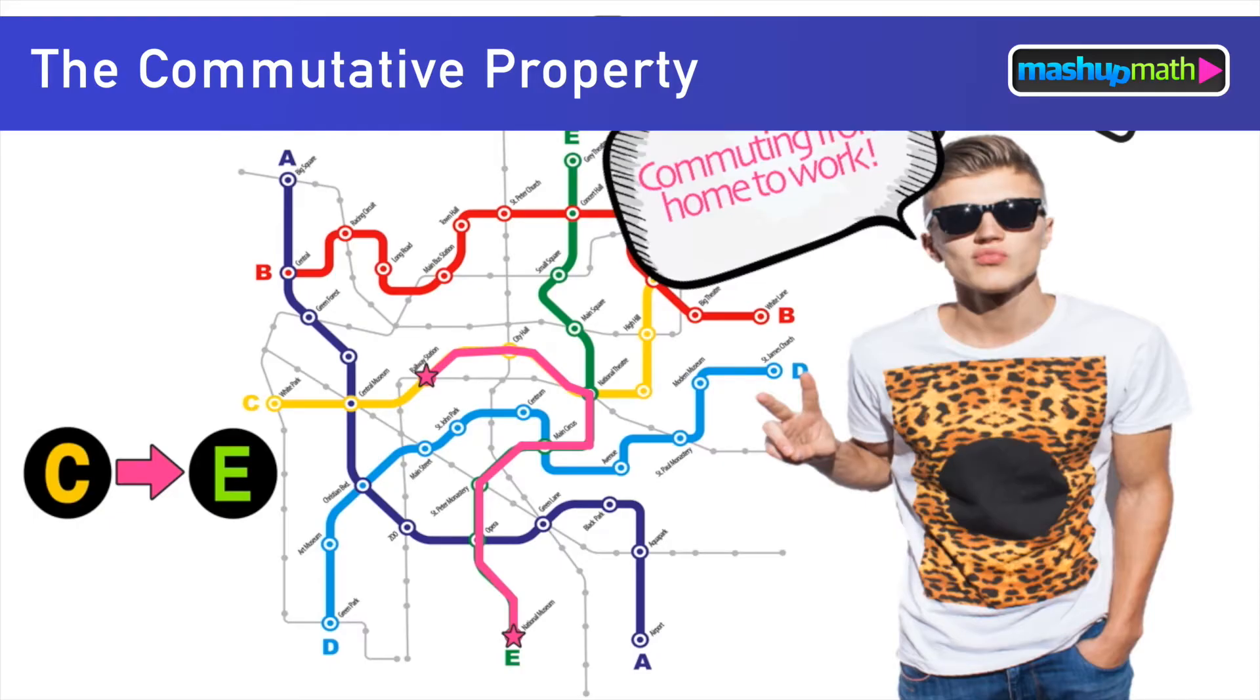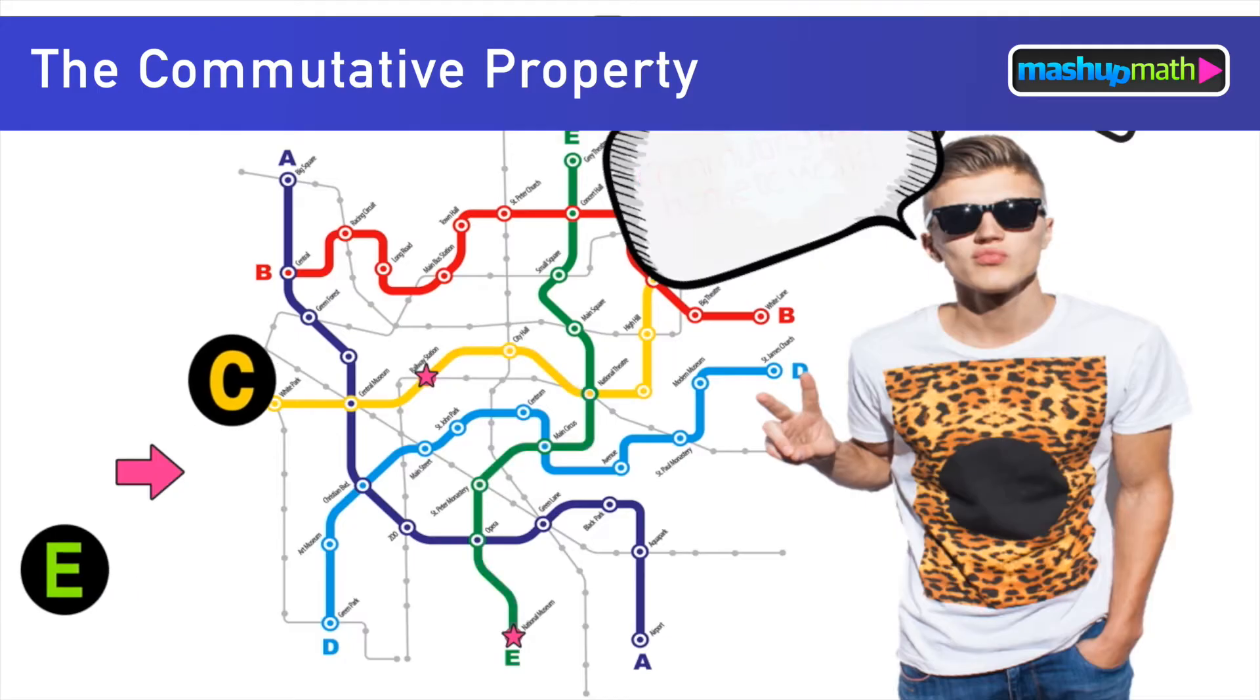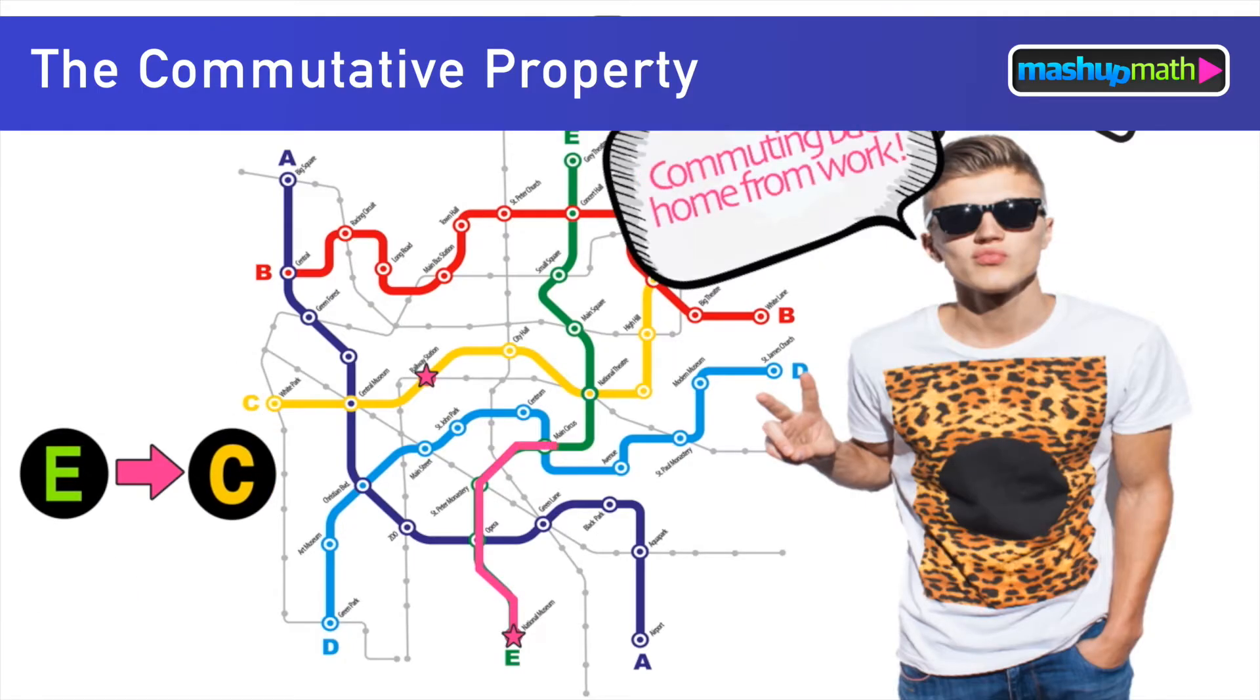When he is ready to commute back home from work he must take the same subway lines but in reverse order. In this case he'll start on the E line which will take him all the way to the National Theatre station and then transfer to the C line which will take him back to where he started at the railway station.